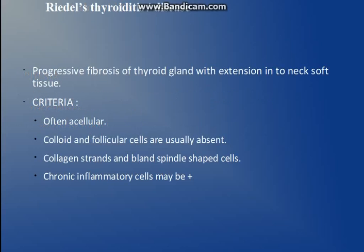Riedel's thyroiditis sometimes goes into the category of inadequate because it is mostly acellular — colloid and follicular cells are not present. After repeat FNAC and considering the clinical implication of Riedel's thyroiditis, the diagnosis can be made, because in this condition the thyroid gland has undergone progressive fibrosis. Therefore, only collagen strands and bland spindle cells with a few chronic inflammatory cells are seen.